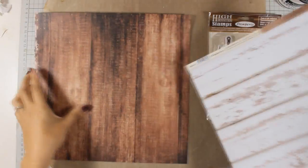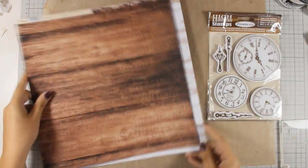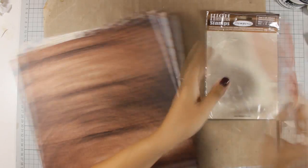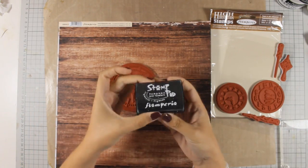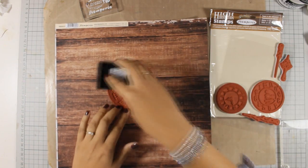These are two pattern papers with wood grain pattern that are from Stamperia and I'm also going to be using these stamps which are also by Stamperia and they are really nice clocks in different sizes. I am going to stamp the clocks on the wood grain pattern paper, the dark one, with black ink.